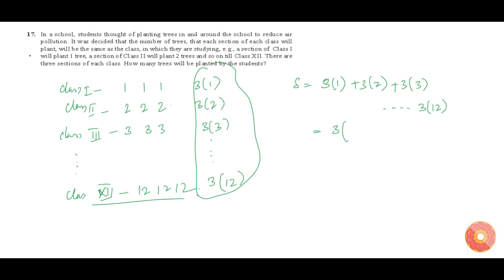Take 3 common: 3 into (1 plus 2 plus 3 plus so on till 12). See this sum, let's put this sum as S dash. S dash equals 1 plus 2 plus 3 plus 4 plus so on till 12.